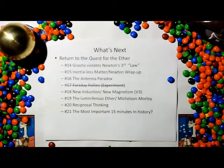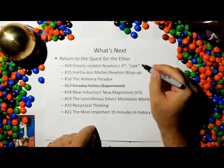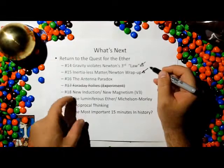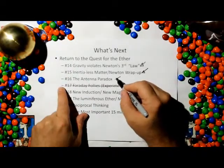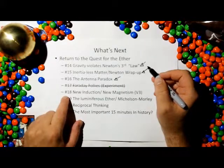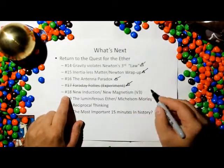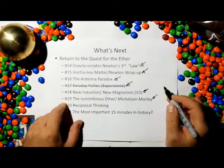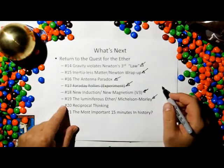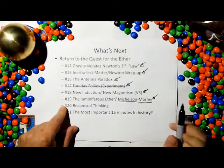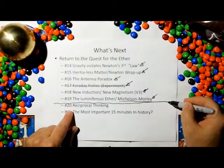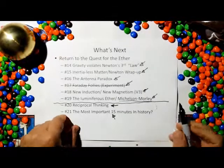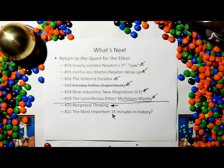So what's next? In the next video, we're going to do gravity violates Newton's third law. That's a very interesting one. And then we're going to talk about the properties of inertialist matter and wrap it all up with Newton in video number 15. Number 16 is going to be the antenna paradox. I recommend that for my antenna engineers. We're going to skip 17. Number 18, we're going to introduce new induction and new magnetism. Number 19, we're going to talk about the old ether model, the luminiferous ether, and the Michelson-Morley experiment, which was supposed to measure the ether. Number 20 begins ethereal mechanics proper. We're going to do reciprocal thinking. And then video number 21, you do not want to miss. You do not want to miss video number 21. Thank you.